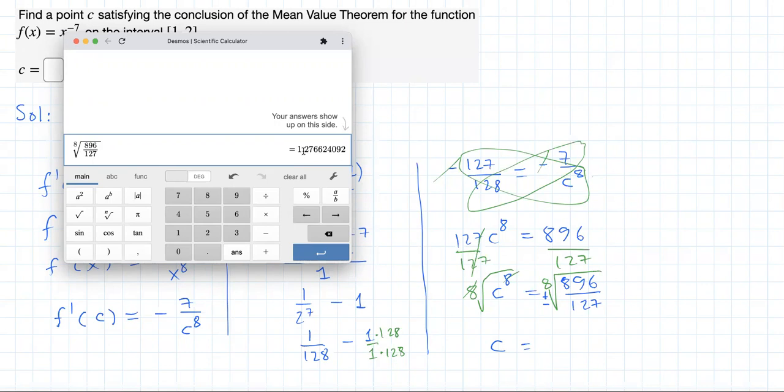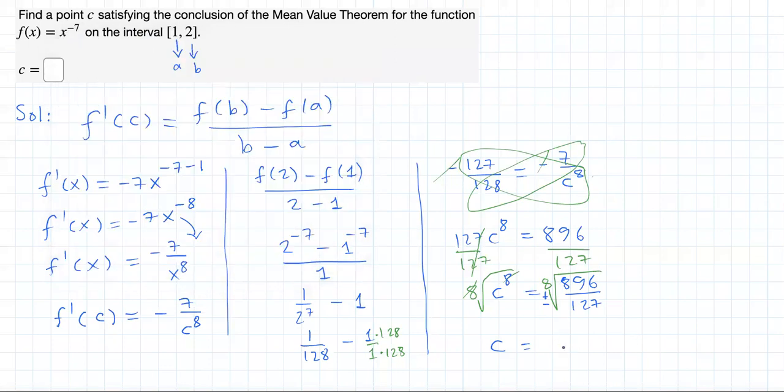Result: 1.2766. If I round it to three decimal places, it would be 1.277.